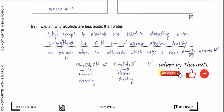Part 4: explain why alcohols are less acidic than water. You need to use the alkyl group — I'll use ethanol as the example, though it applies to any alcohol. Alcohols contain an alkyl group.